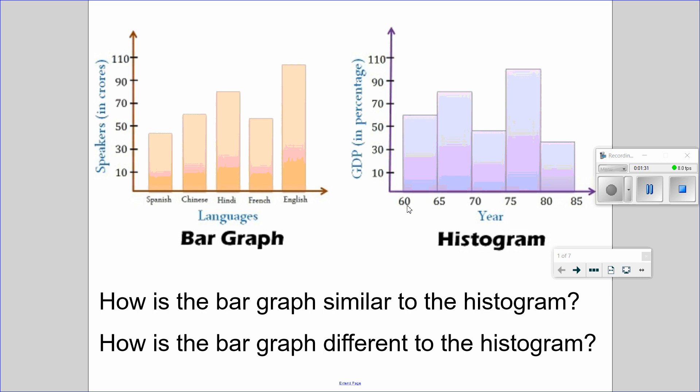So this shows an interval range. It ranges from 60 to 65 of the year. So from 1960 to 65, the GDP in percentage is 60. And from here, from the year 75 to 80, there were 90, 100 GDP in percentage.